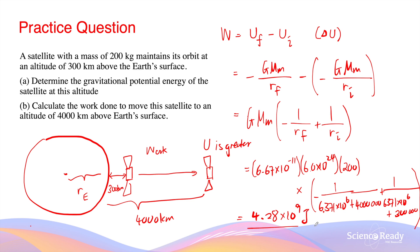This number is the amount of energy we need to put into the satellite to move it from point A at 300 km altitude to point B at 4,000 km altitude. And this will conclude the video on gravitational potential energy.